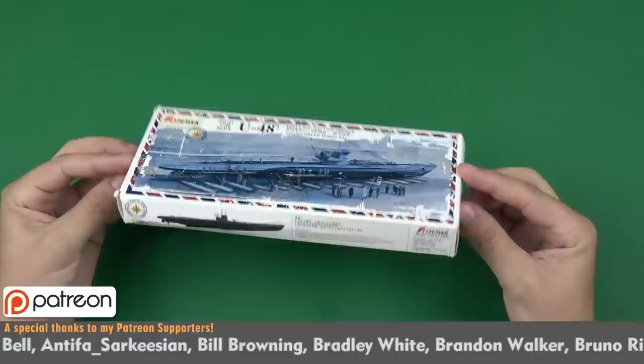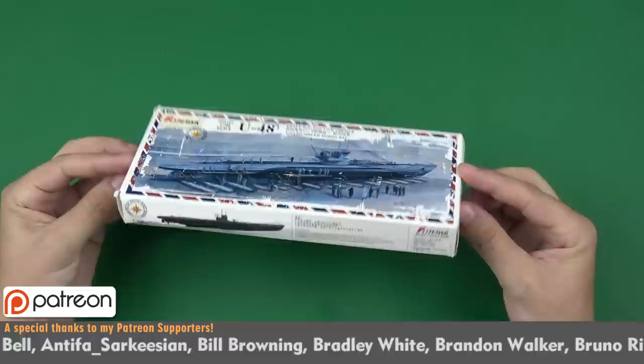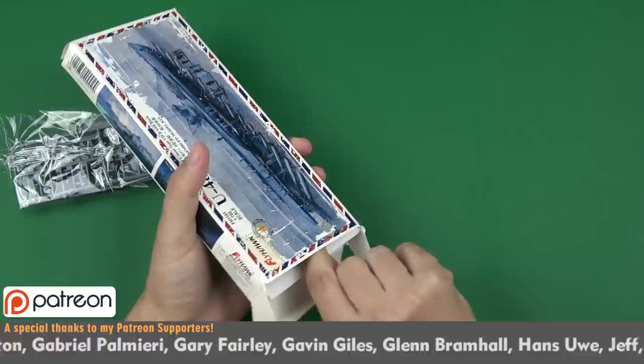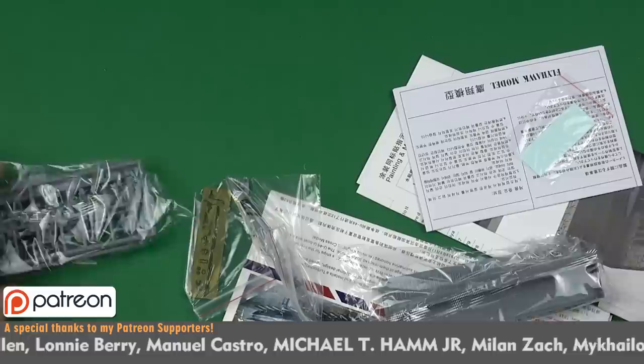Hi there! Here is the Flyhawk DTM U-Bot Type 7B with Dock in 1:700 scale. Let's take a look what's in the box. All small details come with 3 sprues, a PE fret for tiny details, and here is the model. Great! It consists of only 3 pieces.